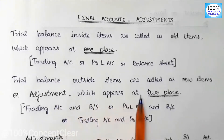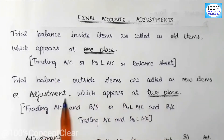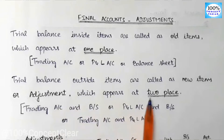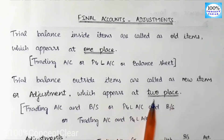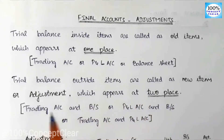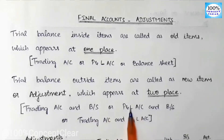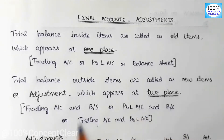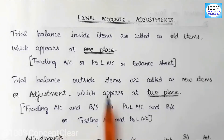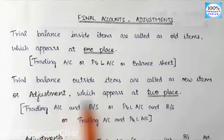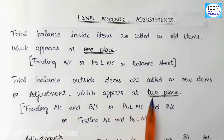Adjustment items appear at two places. One item appears at a trading account and balance sheet, or a P&L account and balance sheet, or a trading and P&L account. In this case, adjustment items appear at two places.